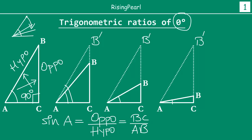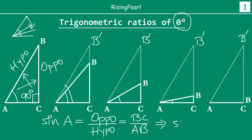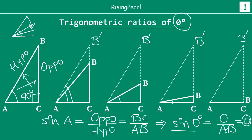Now let's make angle A zero degrees. At this point B and C have coincided, so angle A has become zero. Sine of zero degrees equals BC divided by AB. BC has continuously become smaller and smaller and at this point BC is actually zero. Zero divided by any number is zero. So we have found out that sine zero degrees is zero.